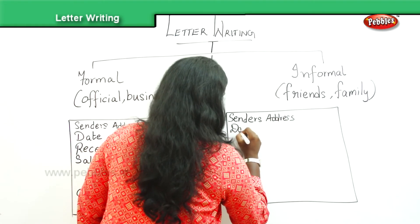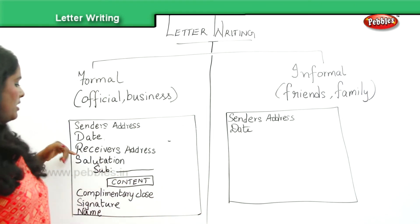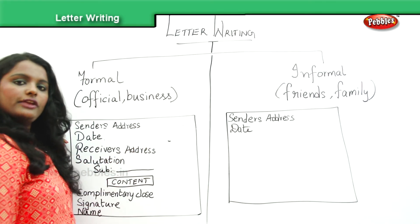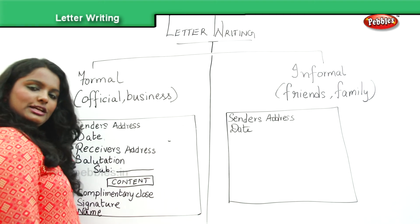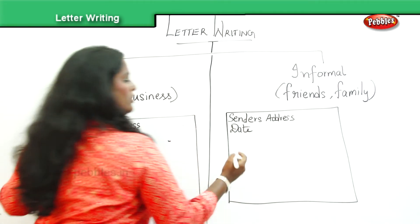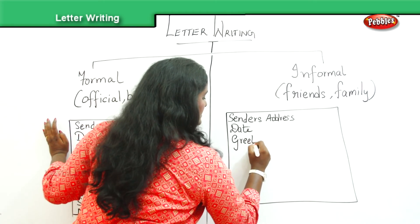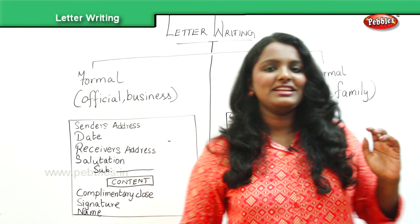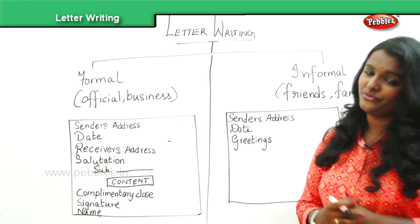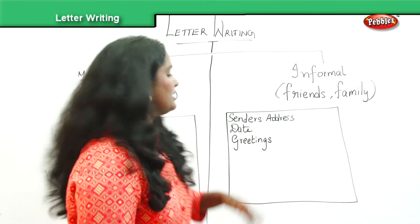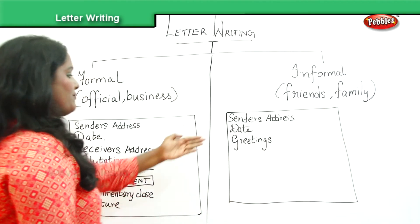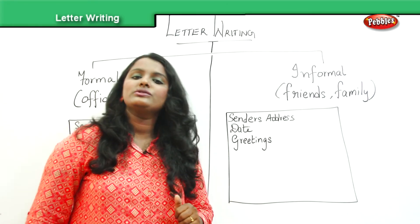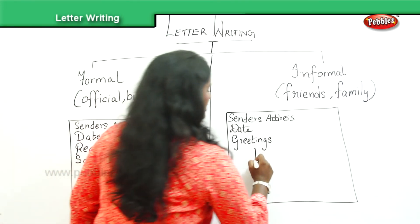After the sender's address you write the date, and you skip the receiver's address — you do not write the receiver's address in an informal letter. 'Salutation' is the term used in formal letters; for informal letters we say greetings. You say 'Hello friend,' 'Hi friend,' 'Dear friend,' or 'Hello Dad' — not 'Respected friend' or 'Respected Mom.' Following the greetings, there is no subject in an informal letter; you go straight to the content.